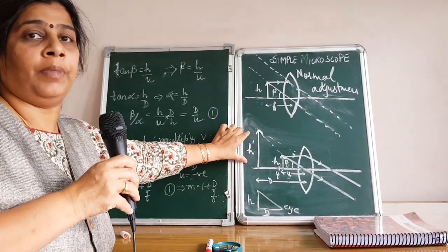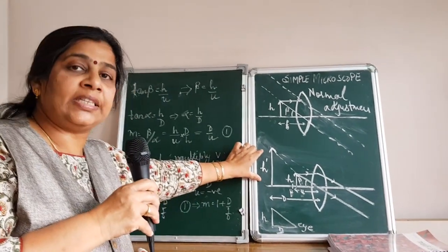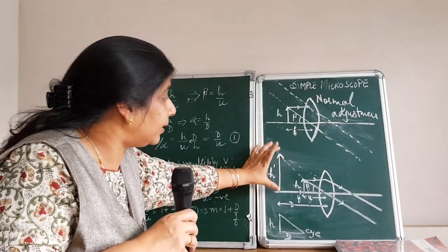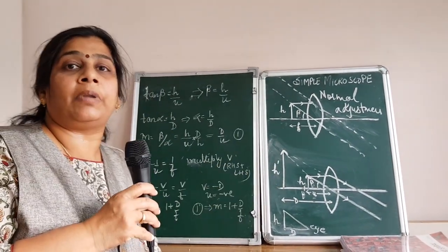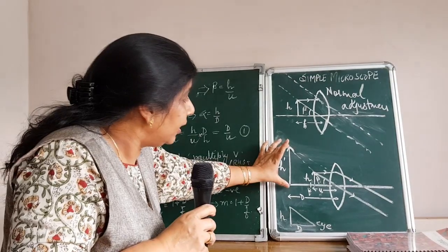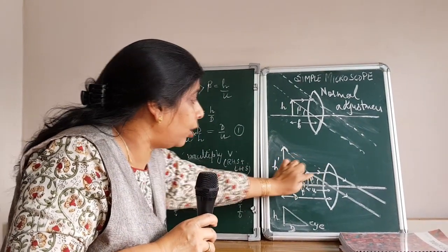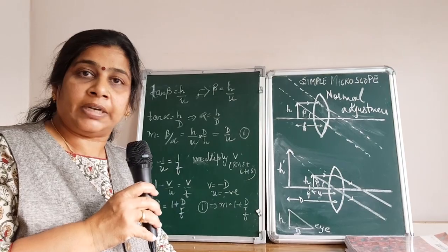Here again, we have to use the formula of magnification which says visual angle subtended by the image to the visual angle subtended by the object. If I take this triangle, bigger one or the smaller one, in both cases they are similar triangles.